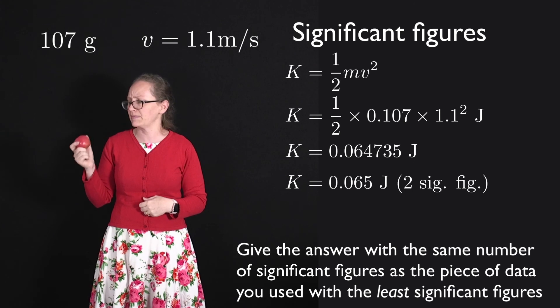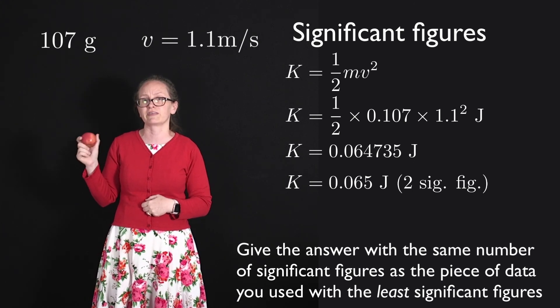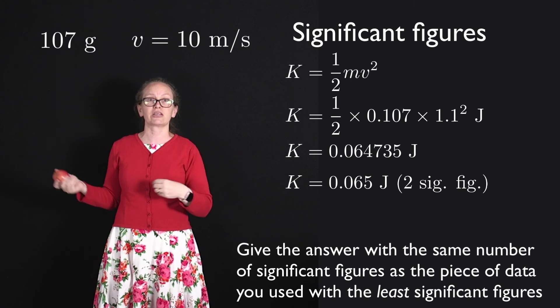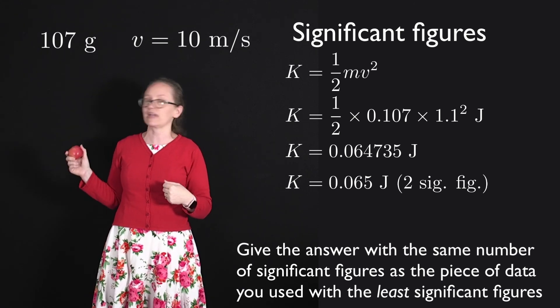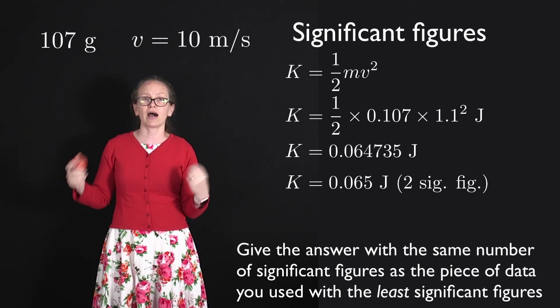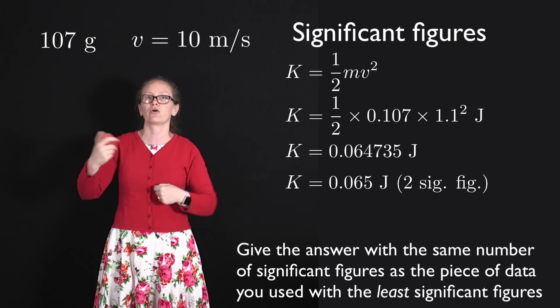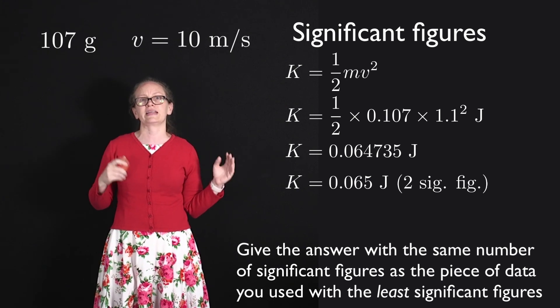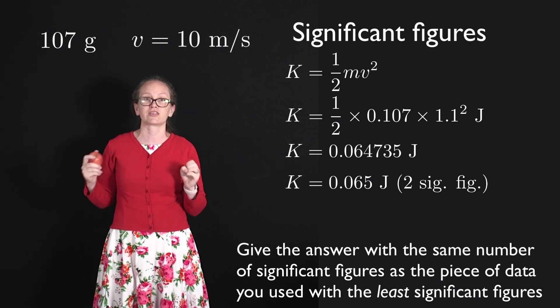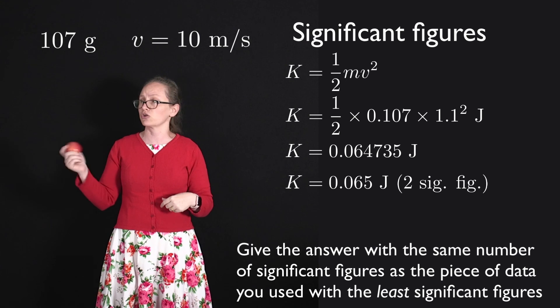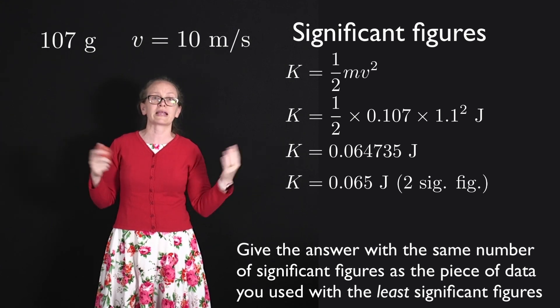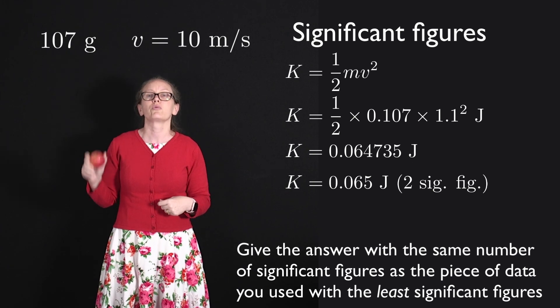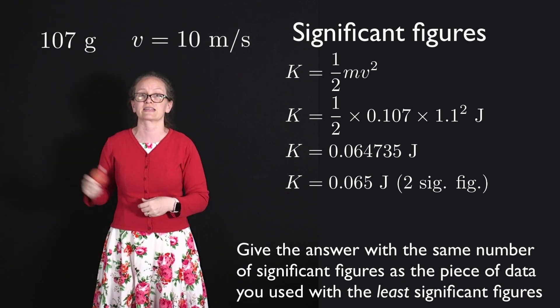Now in some cases there may be a bit of ambiguity around the significant figures, so for example if I threw up the apple and it was measured and I was told that the velocity of the apple was 10 meters per second. Well I don't know if that is known to one significant figure or two significant figures. In this course always assume that it is known to the greater number of significant figures in that case, so two. So when I was giving my kinetic energy in that case I would still give it with two significant figures in the answer.